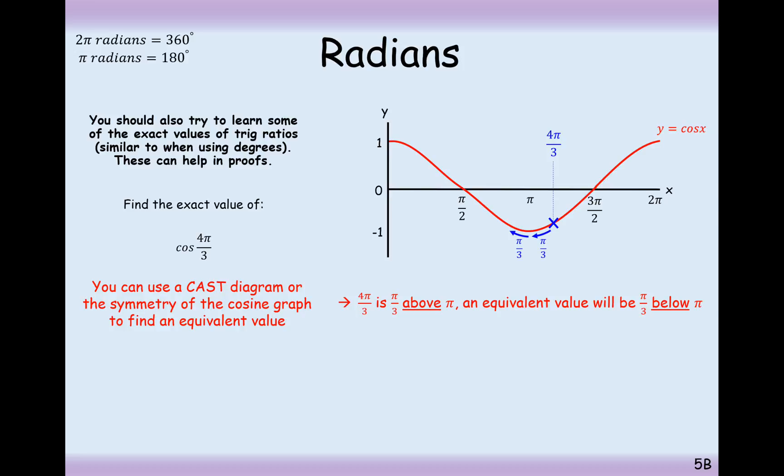If we go back π/3, we're at π, but if we go back another π/3, we're at 2π/3. And then, if we imagine the rotational symmetry that is around π/2, this value here is going to be the exact negative value of cos(π/3).